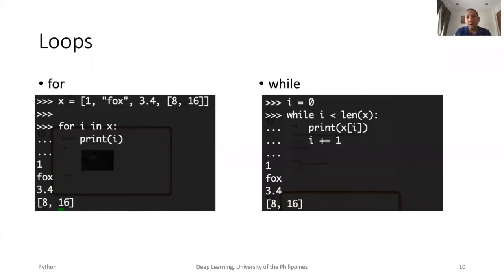Just like other popular programming languages, Python supports loops. There are two basic loops: the for loop and the while loop. A common use of the for loop is iterating over each element of a list, while the while loop is commonly used to execute a code block until a certain condition is no longer true.